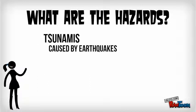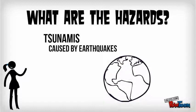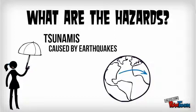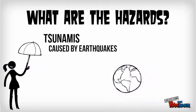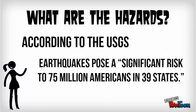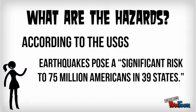Tsunamis are a large killer of people during earthquakes. This is a big wave that travels up out of the ocean after an earthquake, and we will talk about that more in another lecture. According to the United States Geological Survey, earthquakes pose a significant risk to about 75 million Americans spread over 39 different states.